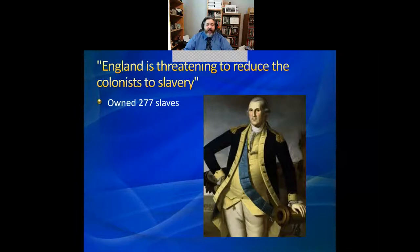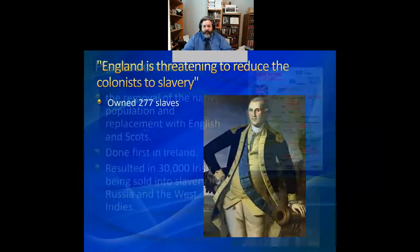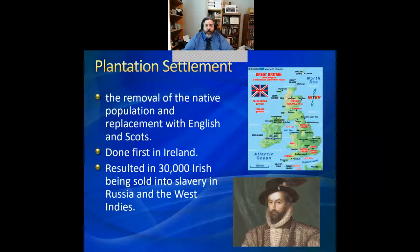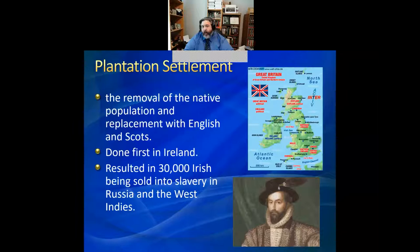The first place England actually tried to colonize was not even in the Americas — it was Ireland. England called the Irish Sea between England and Ireland 'the Virginia Sea.' So this area referred to as the Irish Sea, England called that the Virginia Sea.